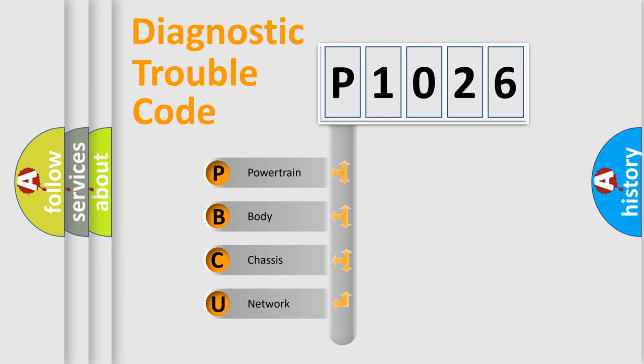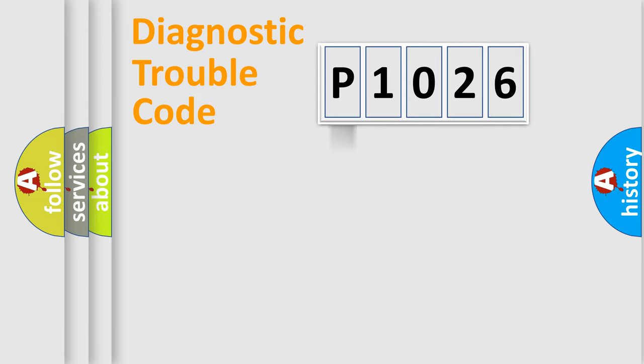We divide the electrical system of an automobile into four basic units: Powertrain, Body, Chassis, and Network. This distribution is defined in the first character code.